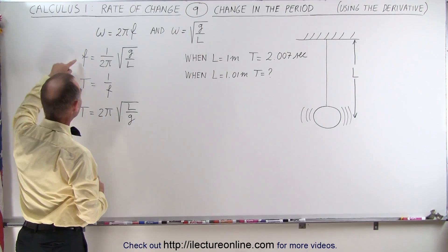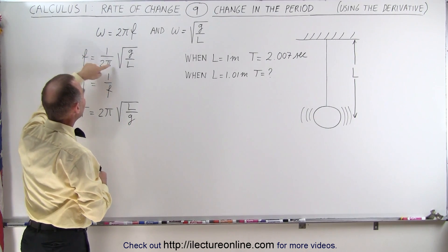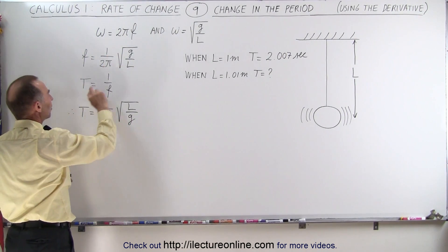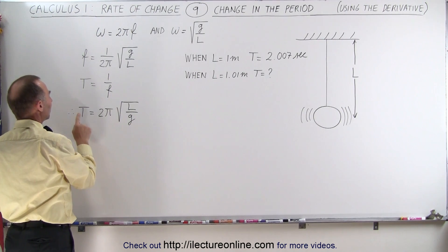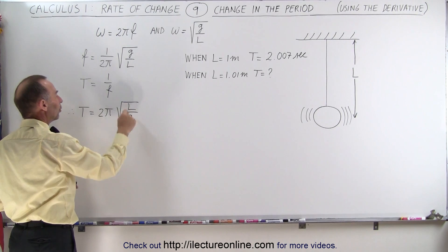And so if we then calculate the frequency of the oscillation, it would be 1 over 2π times the square root of g over L. And since the period is the inverse of the frequency, the period of the pendulum is equal to 2π times the square root of L over g.